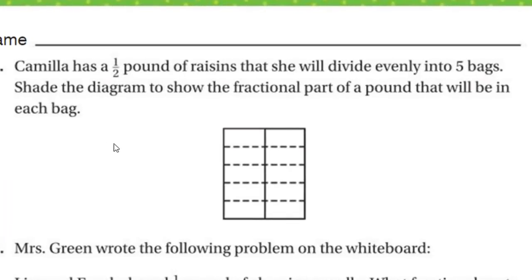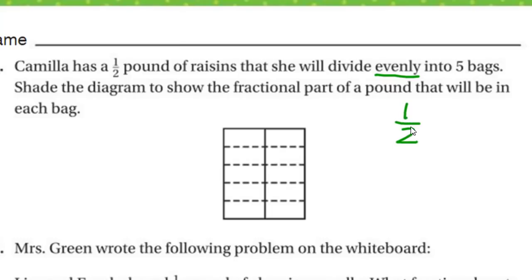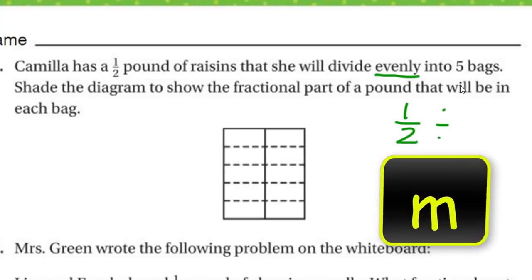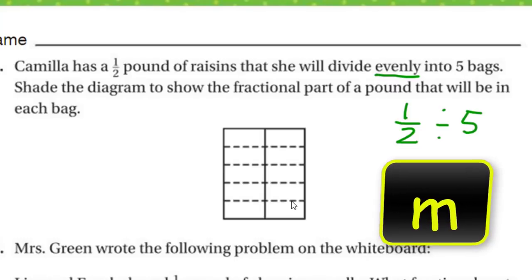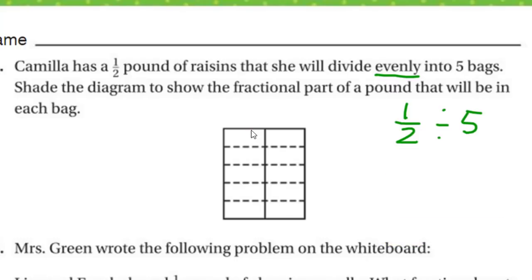It says Camilla has a half pound of raisins that she will divide evenly into five bags. Shade the diagram to show the fractional part of a pound that will be in each bag. Setting this up as an expression — we're starting off with a half pound, and we're dividing that. So the half becomes our dividend, and we divide that by our divisor, which is the five bags. So you look at this and go, okay, this diagram really confuses me — I've got ten sections.